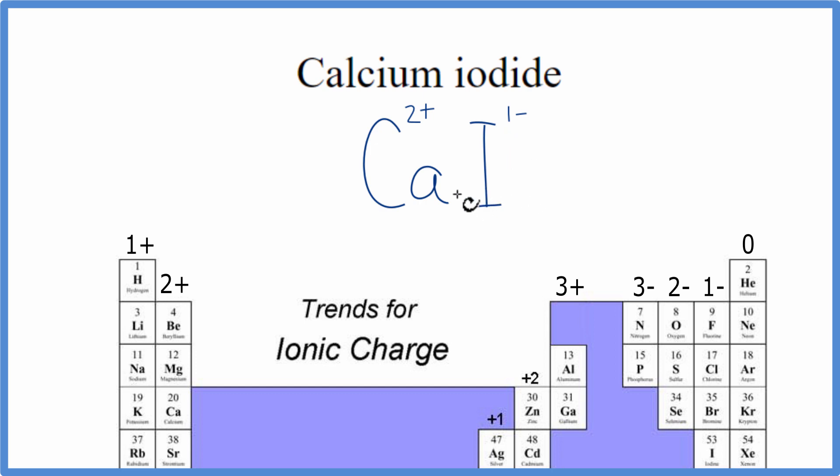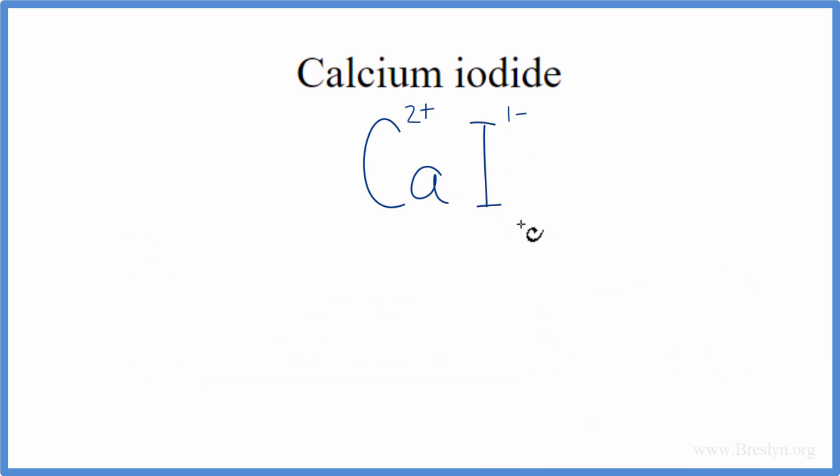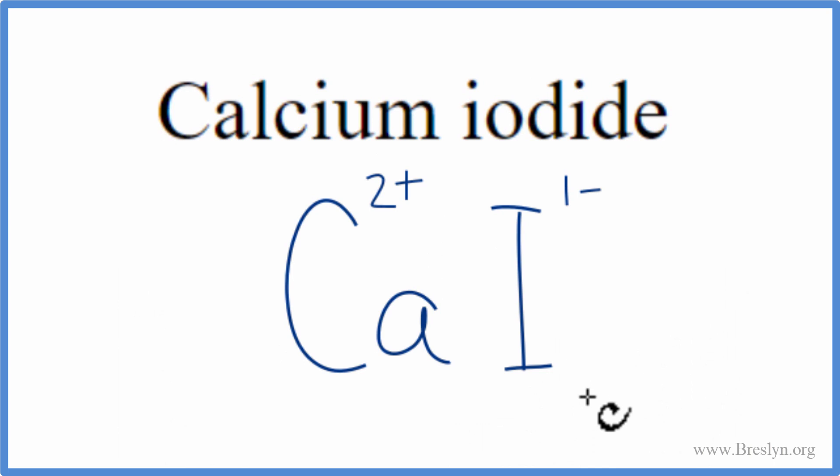So we can change the subscripts to make that happen. We'll use a little trick called the crisscross method. With the crisscross method, we take this 1 and move it here, and the 2, we cross this over here. We don't really write 1, so let's get rid of that, and let's get rid of these charges up here.